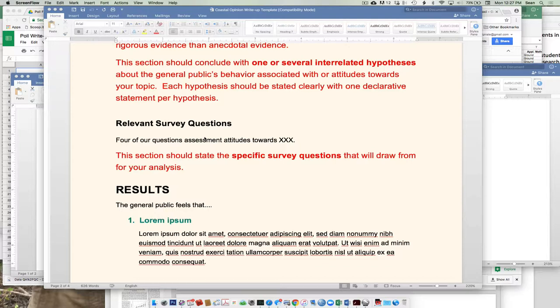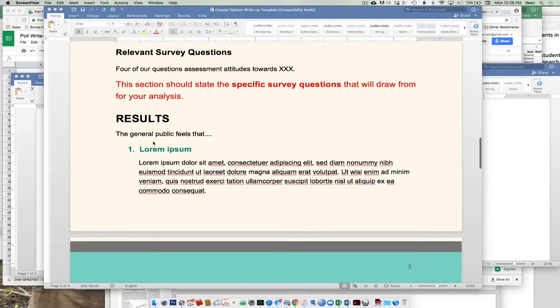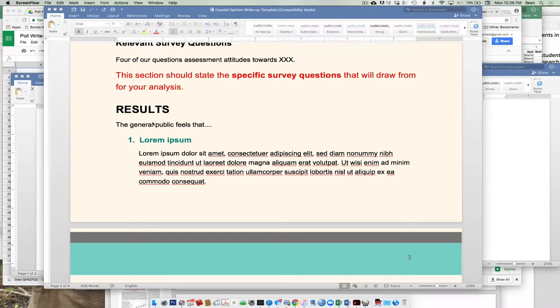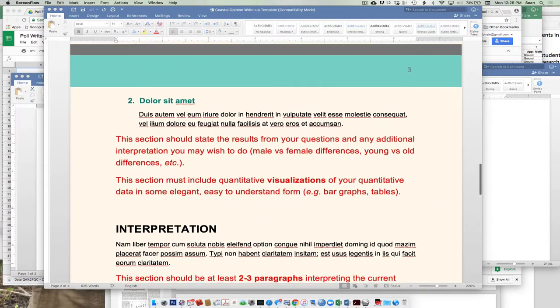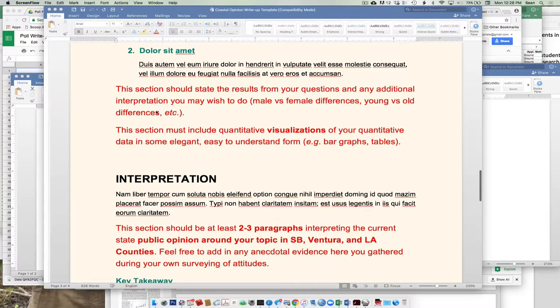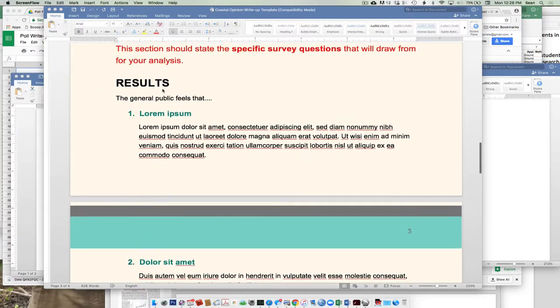But so then you're going to say, okay, here are the specific survey questions. Question number 14, say what the question asked. So just putting it out there. Should be pretty obvious. And then the results. So, hey, this is what people thought about. This is how they responded for question one. This is how they responded to question two, et cetera.